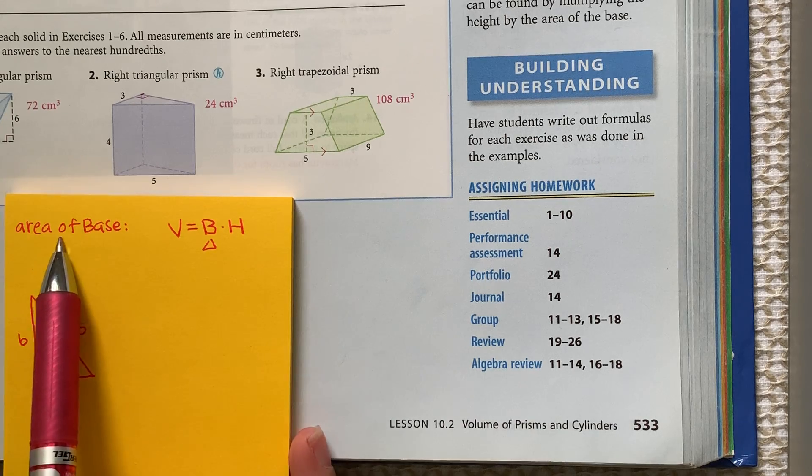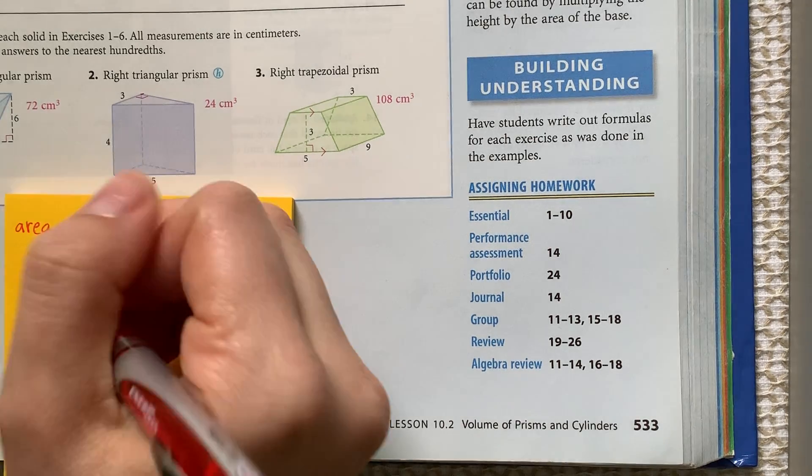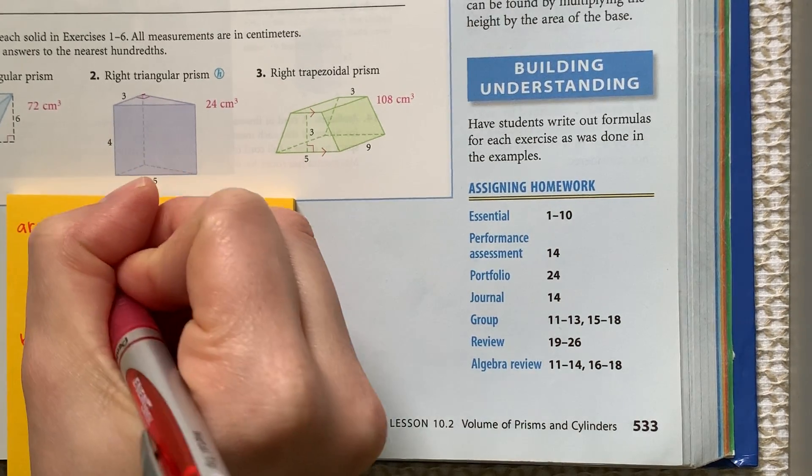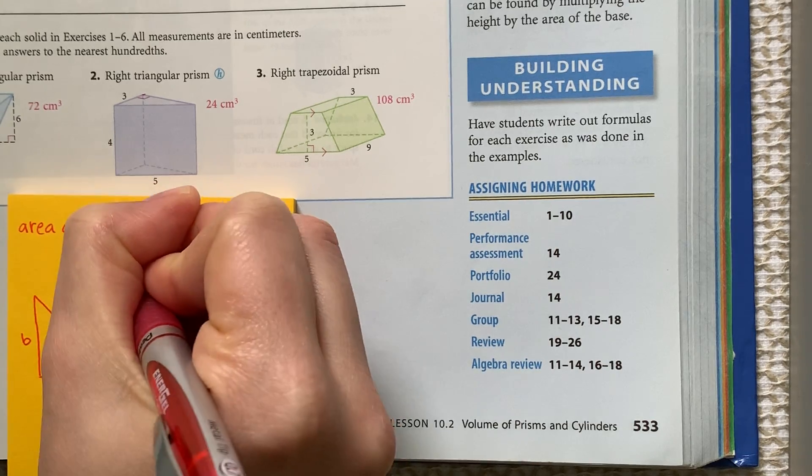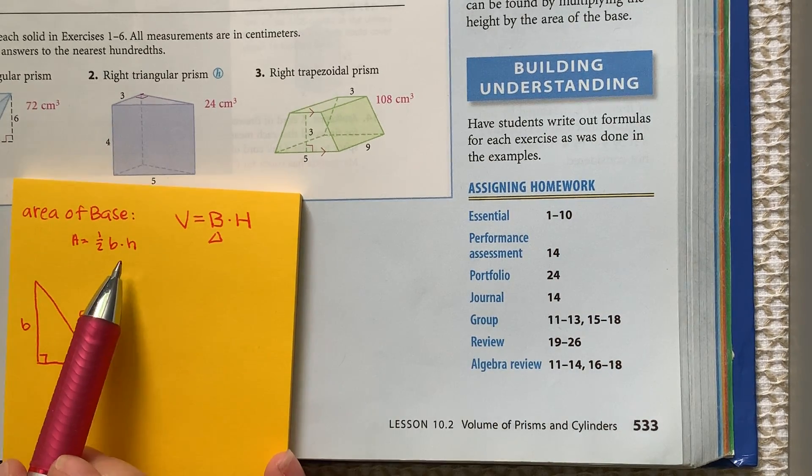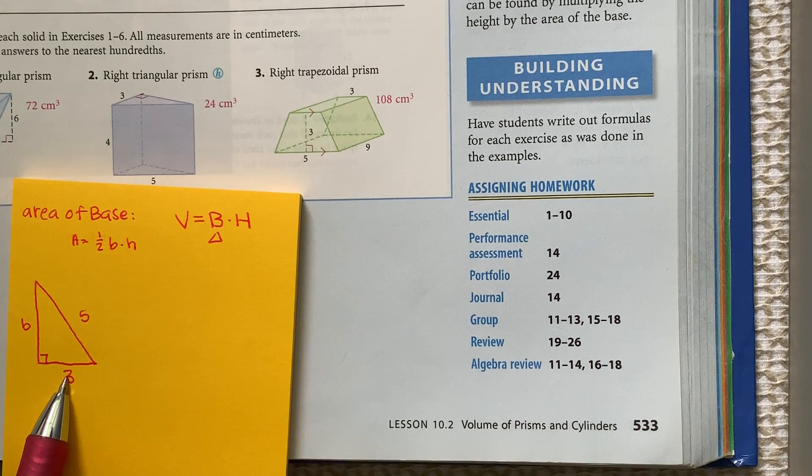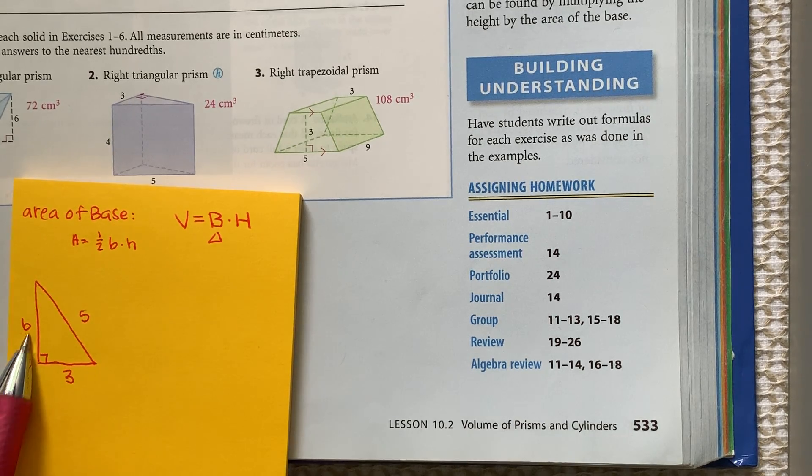We need that in order to find the area of the base, because we need for a triangle area equals one half base times height, and the base and height have to be perpendicular. So our base is three, our height is whatever this side is right here.